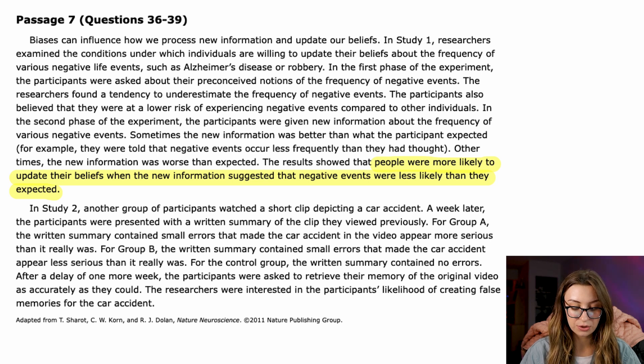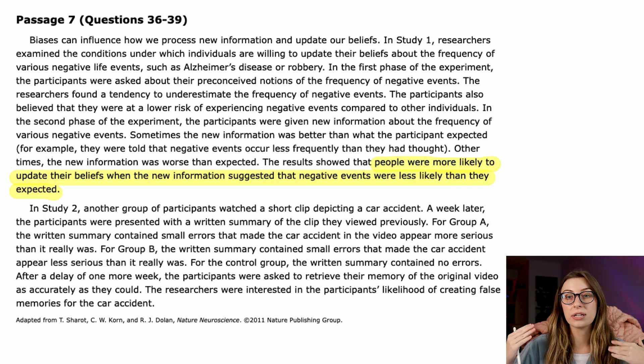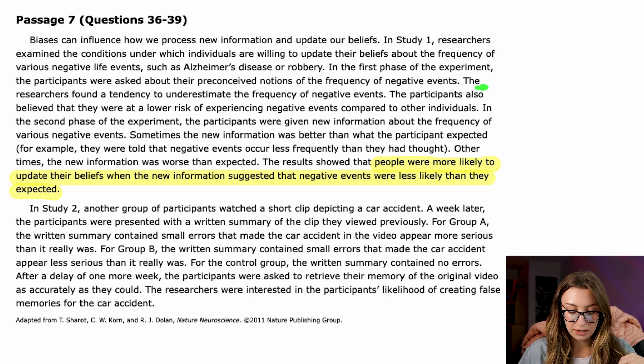Biases can influence how we process new information and update our beliefs. In Study 1, researchers examine the conditions under which individuals are willing to update their beliefs about the frequency of various negative life events such as Alzheimer's disease or robbery. Very different ends of the spectrum on the negative life events. But this is classic psych-soc, right? They're going to give us a study or two and then they're going to ask us questions to draw conclusions from the study. In the first phase of the experiment, the participants were asked about their preconceived notions of the frequency of negative events.